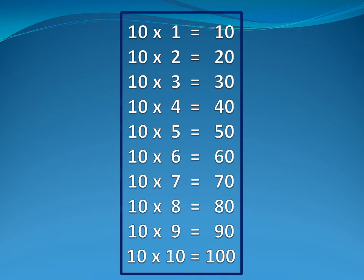Now ten table. Ten one is ten. Ten two is twenty. Ten three is thirty. Ten four is forty. Ten five is fifty.